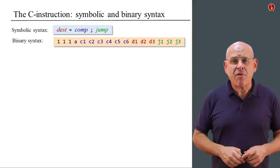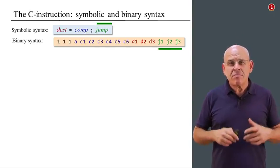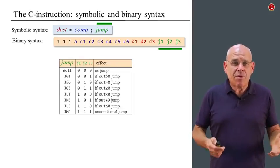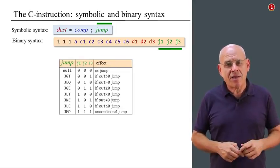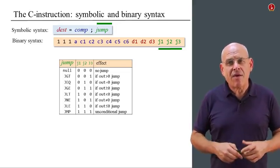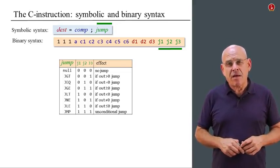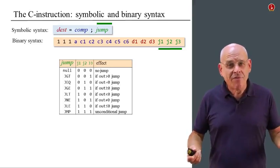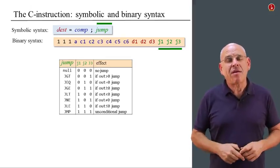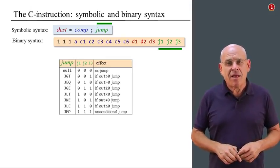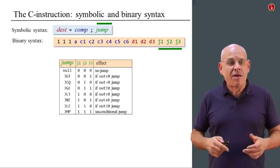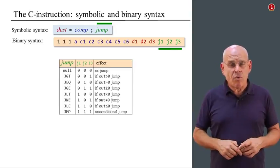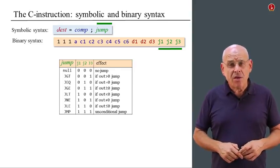Finally, let us focus on the jump field. Almost the same as the destination, we have the mnemonics on the left-hand side, and we have eight different possible binary combinations in the next column. Conveniently enough, we have eight different jump conditions, and the binary equivalents range from 0, 0, 0 to 1, 1, 1.